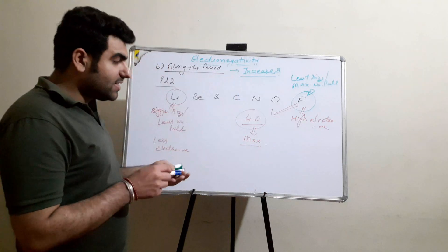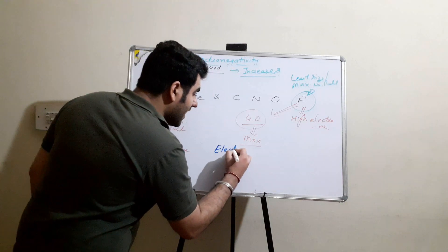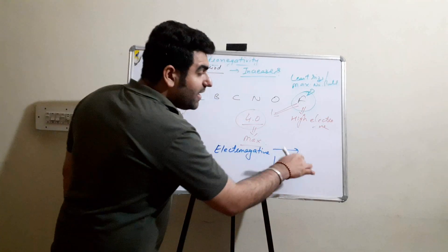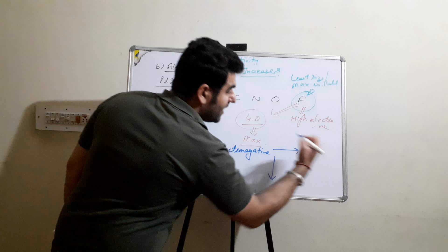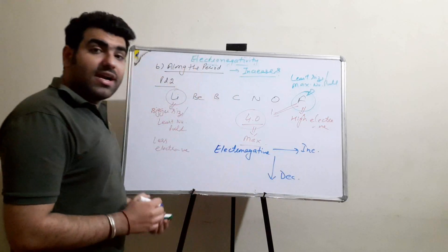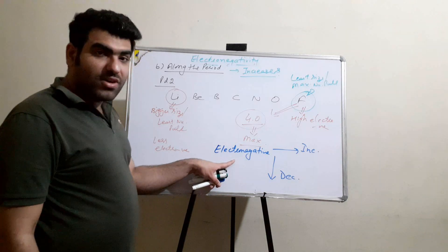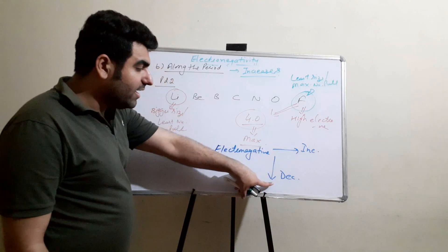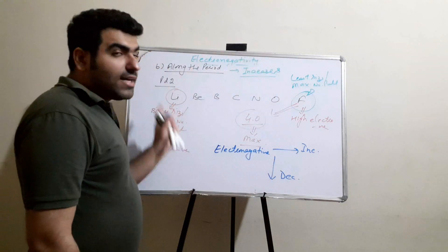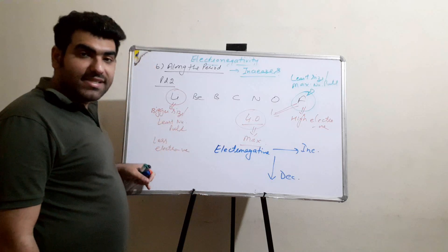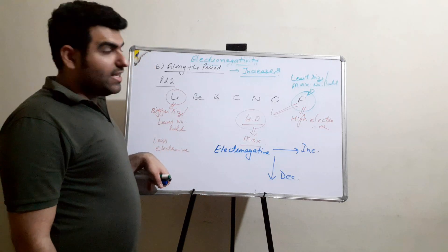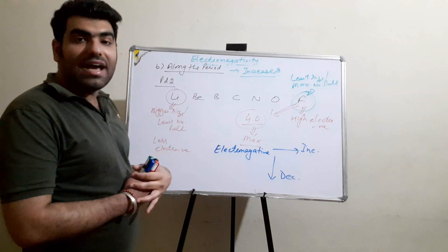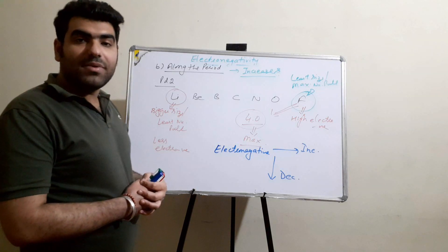So along the period electronegativity increases, and down the group it decreases. Electronegativity is complementary in groups and periods. For the entire periodic table, the least value is for cesium at 0.7 and the maximum value is for fluorine at 4.0. This was all about electronegativity, and we will discuss the next concept in the next video.